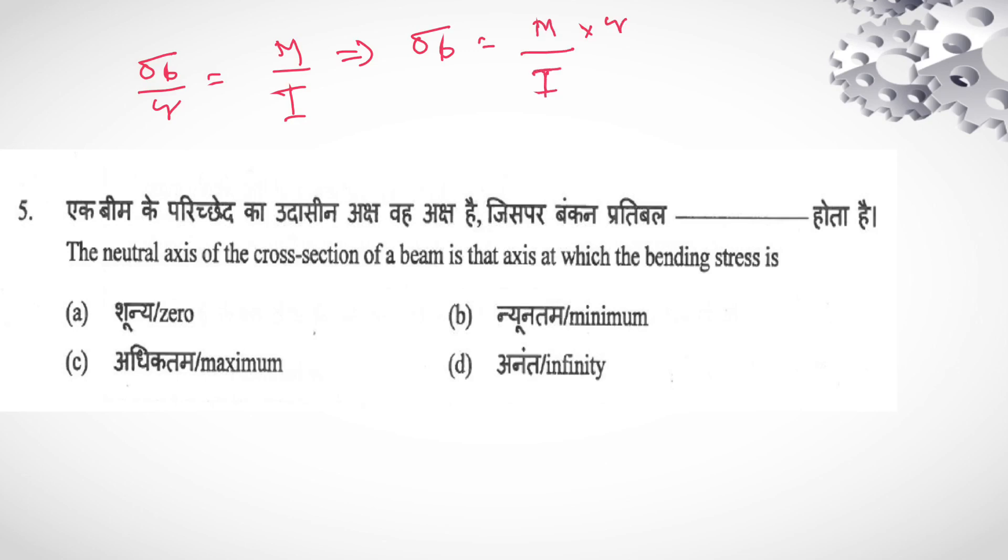neutral axis, so at neutral axis y = 0. If y will become 0 means your σ_b or bending stress it will become 0. So from option, bending stress is 0, A is your correct answer.